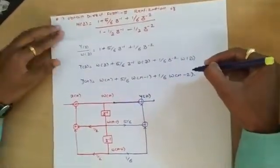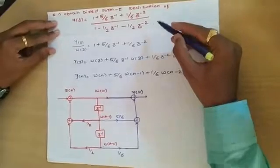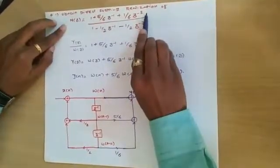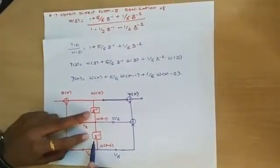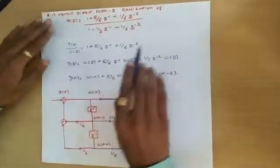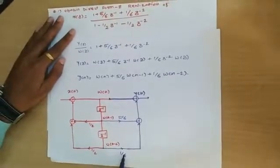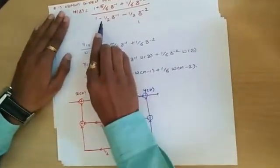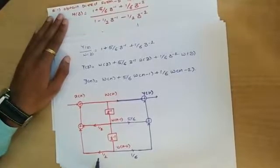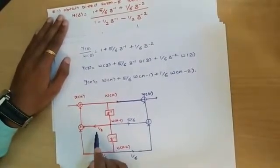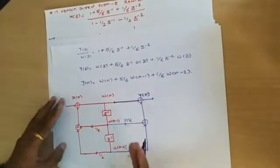We solved this using the traditional method. Now let's solve the same example in a fraction of seconds using the shortcut method. Observe the pole and zero points. We need delay elements z⁻¹ and z⁻². The zero coefficients remain the same: +5/6 and +1/6. The only difference is that pole coefficients change sign — negative pole coefficients become positive during realization, and positive ones become negative.